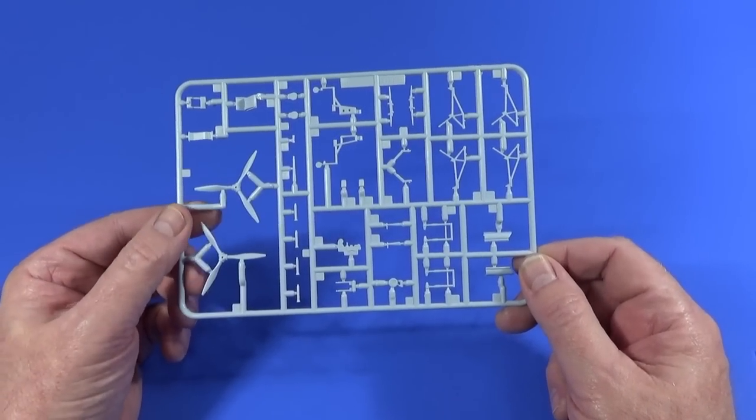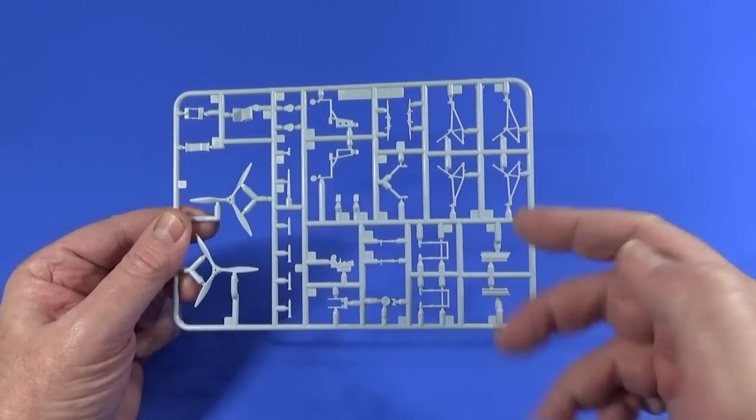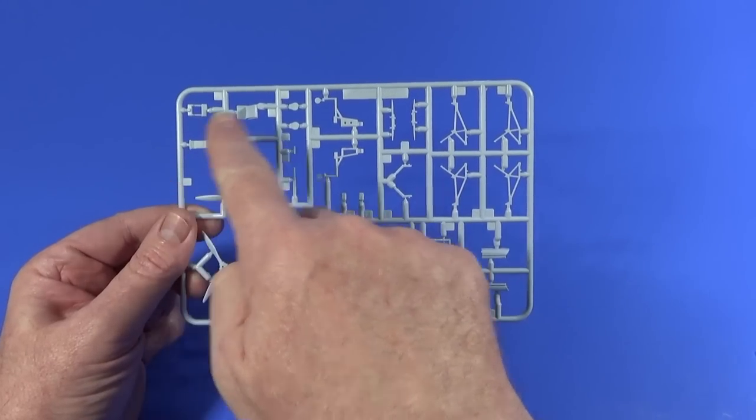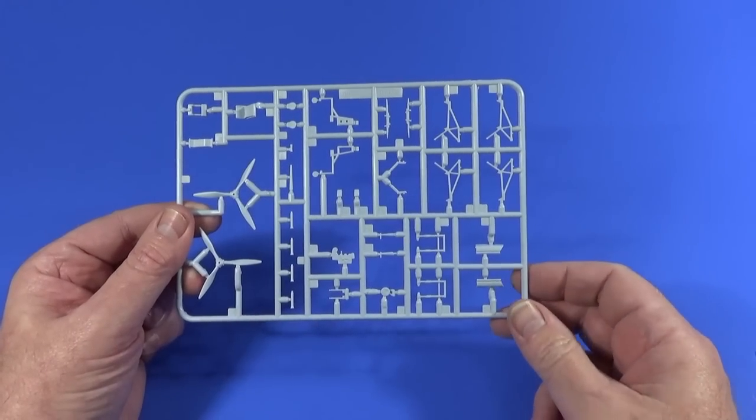Frame E, obviously more undercarriage parts. Bristol used a lot of bits of undercarriage, they really did. Some bits of the interior of the cabin, pilot seat, propellers and so on.